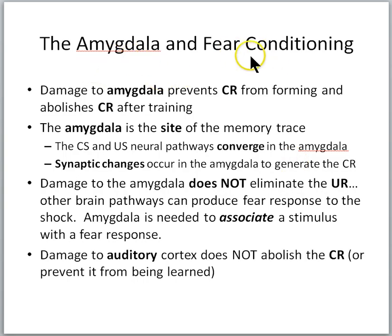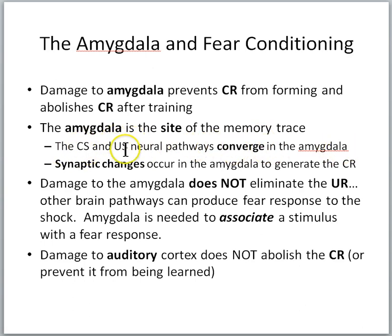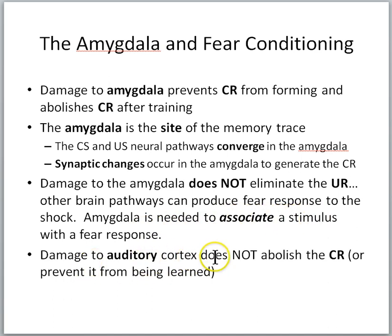Let's summarize the involvement of the amygdala in fear conditioning. Damage to the amygdala prevents the conditioned response from forming — you can't train an animal to associate a tone with a shock. And if you do train the animal to become afraid of a tone, damage to the amygdala abolishes that conditioned response. The CS and US neural pathways — the tone and shock pathways — converge in the amygdala, and synaptic changes there generate the conditioned response. Damage to the amygdala does not eliminate the unconditioned response — the fear to the shock alone — because other brain pathways can produce that. Interestingly, damage to the auditory cortex does not abolish the conditioned response, which was the puzzle that originally led researchers to the amygdala.